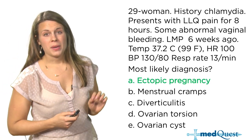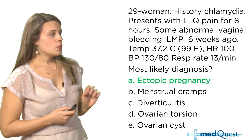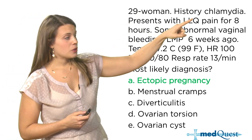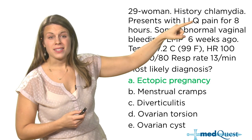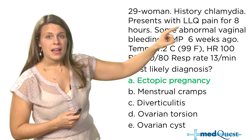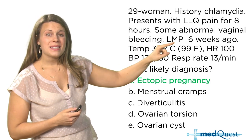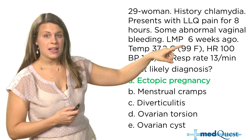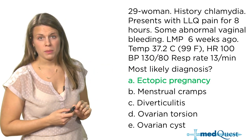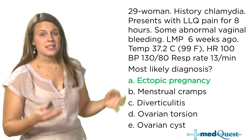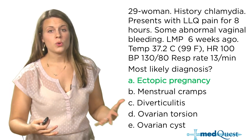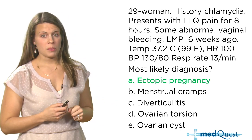The answer is ectopic pregnancy. When you think about it, this 29-year-old woman has a risk factor for an ectopic pregnancy — her history of chlamydia. She's having left lower quadrant pain and she also missed her last period, with her LMP six weeks ago. You're suspecting she might be pregnant. Given all of these findings taken together clinically, the most likely diagnosis is ectopic pregnancy.